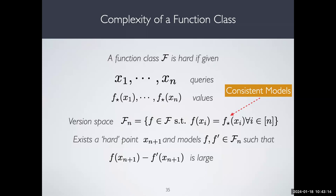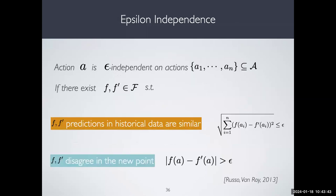In the noiseless scenario, an F that is hard to learn is one where you have made a bunch of queries and there is still a point unexplained by the historical data. That's the basis of the idea of eluder dimension: we try to maximize over all possible sets of queries and define a notion of dimension as the largest subsequence of queries satisfying some property.